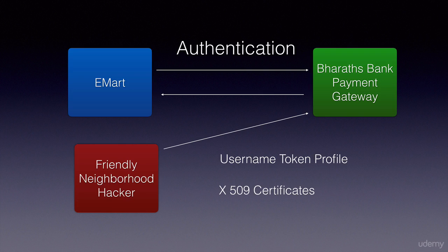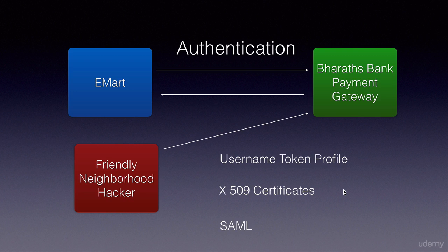In the WS-Security standard there are three ways to do authentication: using username token profile, X.509 certificates, and SAML. SAML is used for single sign-on — that is, within our organization, if we have multiple web service provider applications and we want clients to log into one application and be able to access any other web service without logging in again, we can do that using SAML.